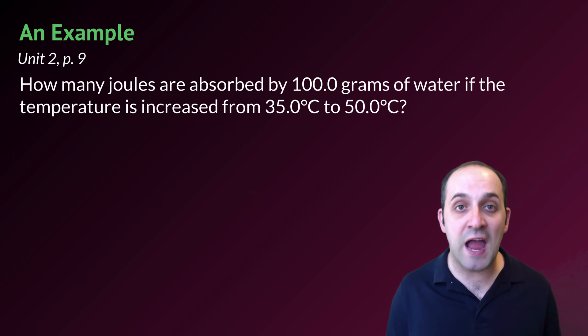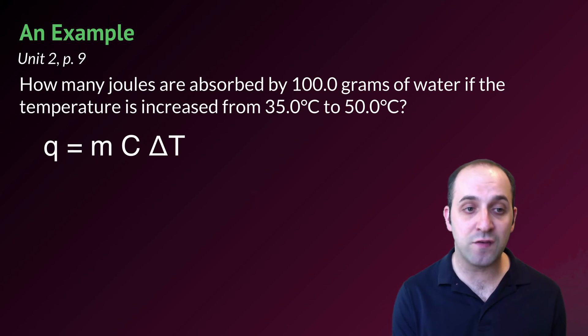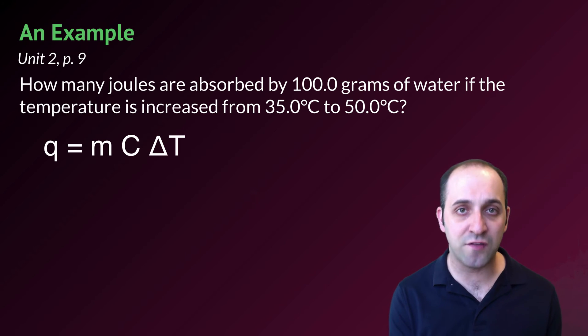This is from page 9 of our unit 2 packet. The question is, how many joules of energy are absorbed by 100.0 grams of water if the temperature is increased from 35.0 degrees Celsius to 50.0 degrees Celsius? We're going to use the calorimetry equation Q equals MC delta T. We are looking in this case for our Q value or our amount of heat. That means that we should have been given everything else that we need in order to solve this problem.